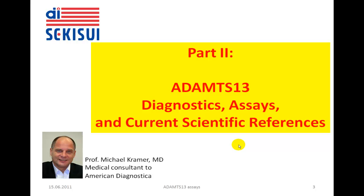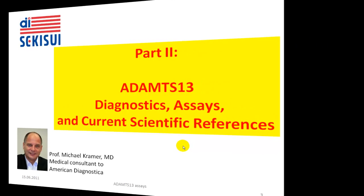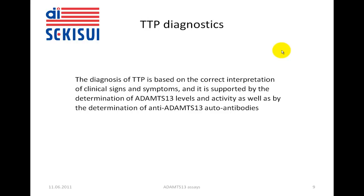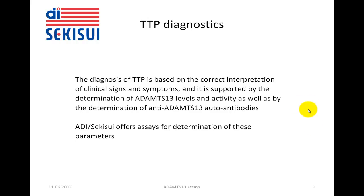This is part two of two parts. In this part you will learn more about diagnostics, assays available from ADI Sekisui, and some current scientific references. TDP diagnostics summarized here: the diagnosis of TDP is based first on the correct interpretation of clinical signs and symptoms, supported by the determination of ADAMS-13 levels and ADAMS-13 activity, as well as by the determination of anti-ADAMS-13 autoantibodies. ADI Sekisui offers a range of assays for the determination of these diagnostic parameters.